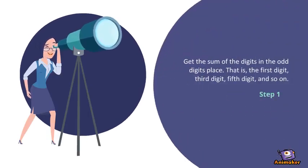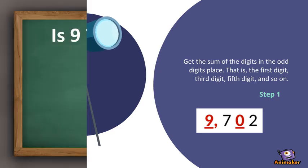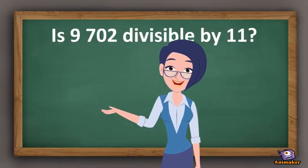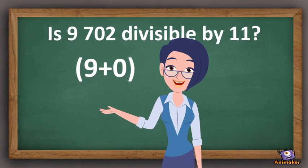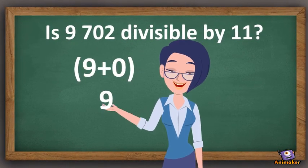Step 1: Get the sum of the digits in the odd digits place. So in our example, we have 9 in the first digit and 0 in the third digit. 9 plus 0 equals 9.